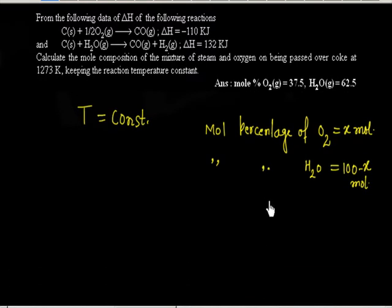So total heat released: if you see the first reaction, for half mole of oxygen, heat released is minus 110 kilojoule. So per X mole, heat released is minus 110 times 2 times X kilojoule.